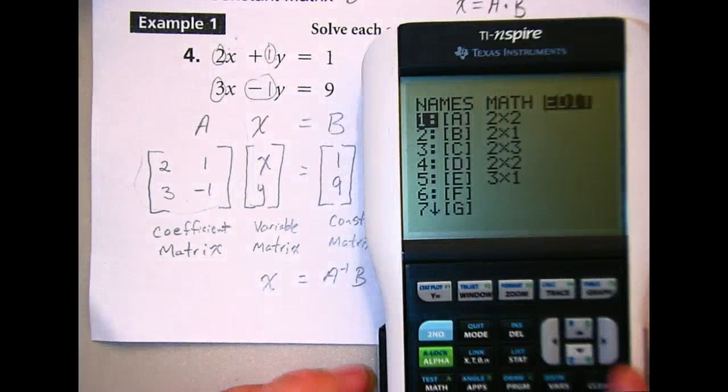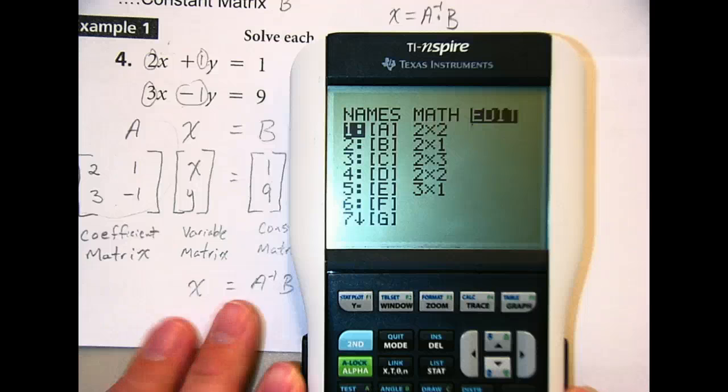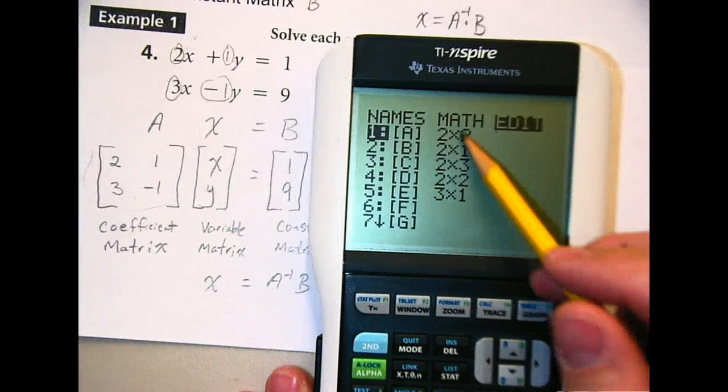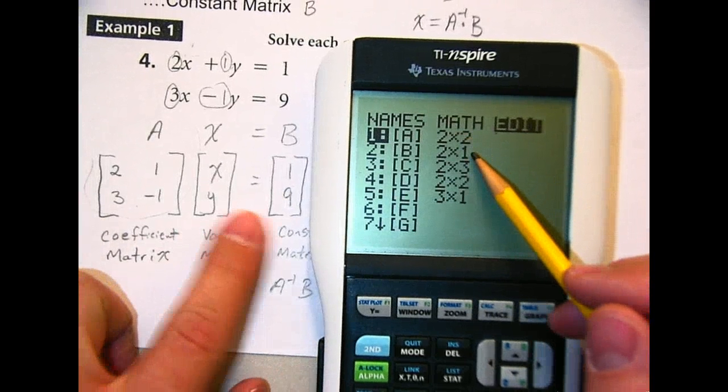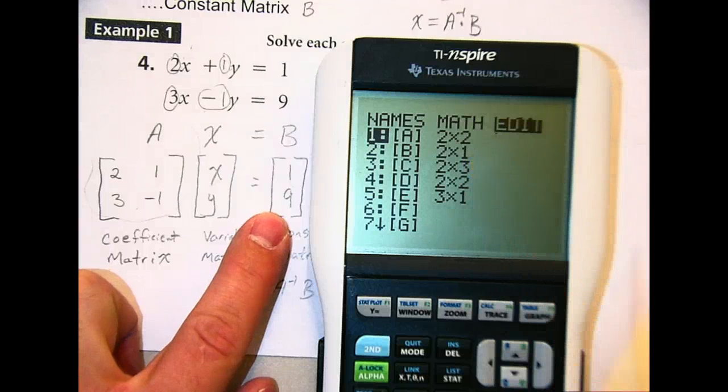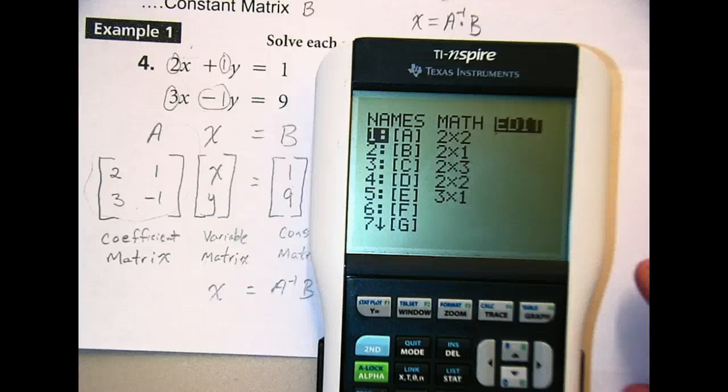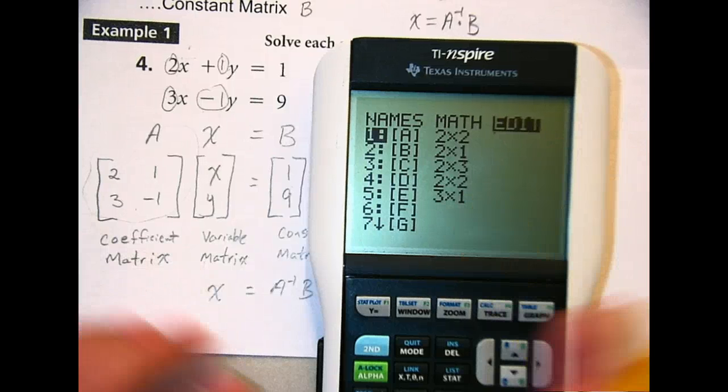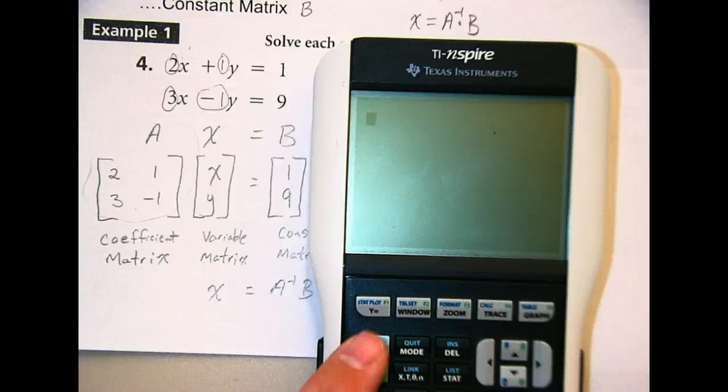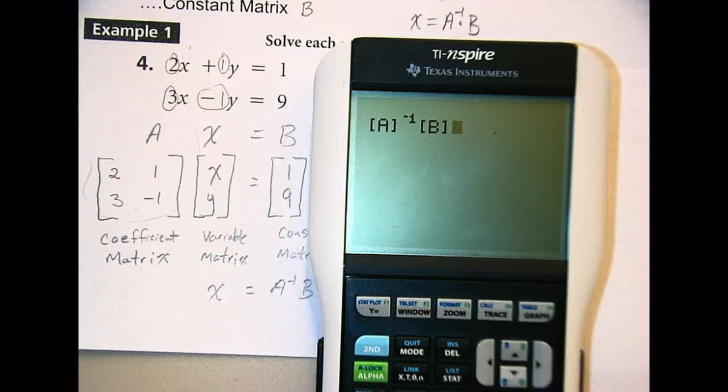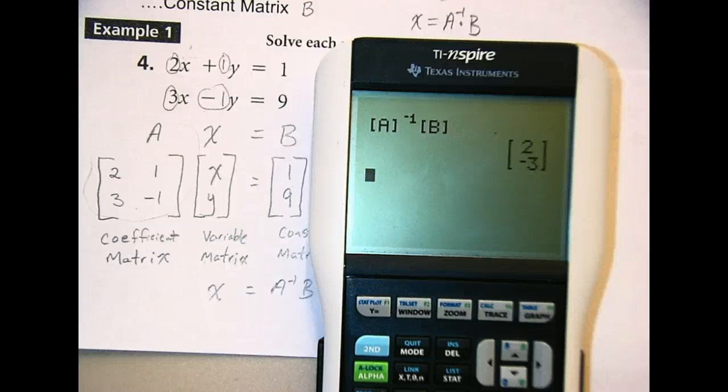Now I've put mine in. I have a bunch of other matrices in there right now. But you'll notice my A matrix is a 2 by 2. My B matrix is a 2 by 1. We don't have to put the variable matrix in. We know what the variables are. But if we quit here and I go inverse of A times B and hit enter, I get 2 negative 3. Now how many got 2 negative 3? How many are just accepting that it's true? How many actually checked it?